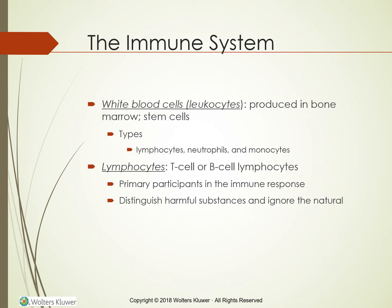White blood cells, called leukocytes, are produced in the bone marrow. Initially, all blood cells are nonspecific stem cells that later differentiate into various types of cells, including lymphocytes, neutrophils, and monocytes. Figure 33-2 shows the development of various types of blood cells. Lymphocytes, which are either T-cell or B-cell lymphocytes, comprise 20 to 30 percent of all leukocytes. T-cell and B-cell lymphocytes are the primary participants in the immune response — they distinguish harmful substances and ignore those natural and unique to a person. Table 33-1 on page 550 identifies various types of lymphocytes and the roles they play in the immune system.